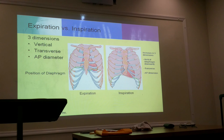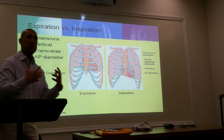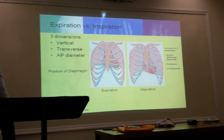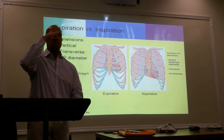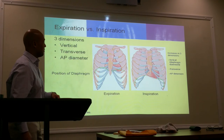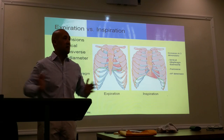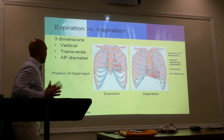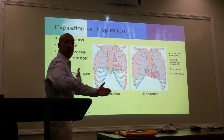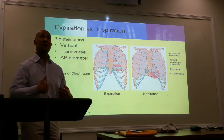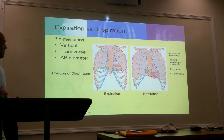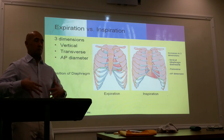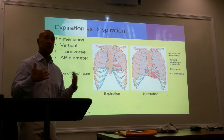Expiration versus inspiration — three dimensions of movement of your thoracic cavity. The first is vertical movement: when taking a breath in or out, you're going to have vertical movement up and down. Next is transverse — side to side movement. Last is the diameter — front to back. So it moves three ways: up and down, side to side, and front to back. During expiration to inspiration there's also going to be movement of the diaphragm.